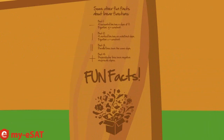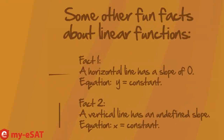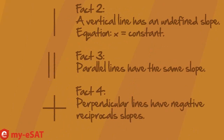Before we wrap up linear functions, here are some other fun facts. Fact 1: A horizontal line has a slope of zero — always. For example, a horizontal line might have the equation y equals five. Fact 2: A vertical line has an undefined slope, so you can't write the equation in standard form. Instead, it looks like x equals a constant, such as x equals four or x equals seven. Fact 3: Parallel lines always have the same slope. Fact 4: Perpendicular lines have negative reciprocal slopes — so if one line has a slope of two, the perpendicular line would have a slope of negative one-half.